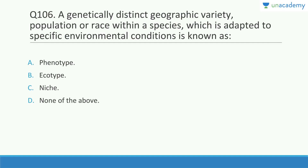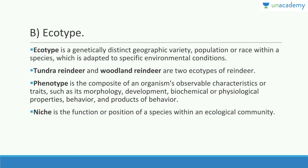A genetically distinct geographic variety, population, or race within a species which is adapted to specific environmental conditions is called an ecotype. For example, tundra reindeer and woodland reindeer are two ecotypes of reindeer. Phenotype is the composite of an organism's external characters — height, weight, behavior. Niche is the specific function or position of a species in a given ecosystem.